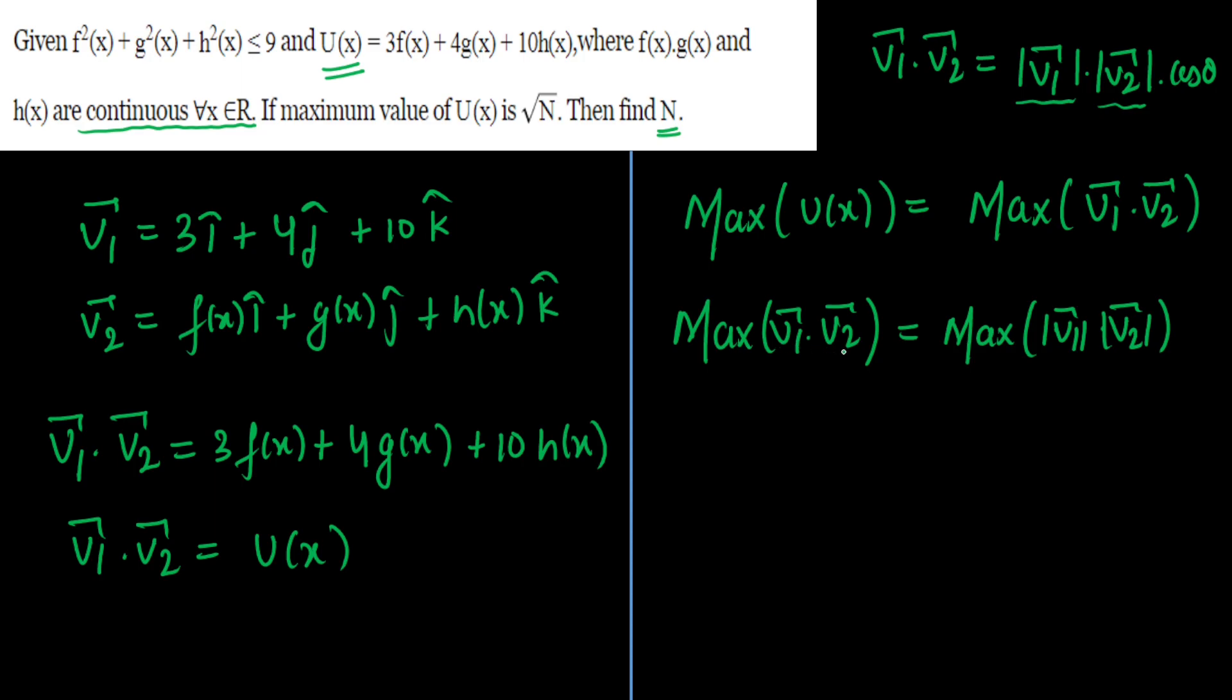And maximum of v₁·v₂ is u(x). So let's calculate maximum of this product. |v₁| we have to calculate here - that is √(3² + 4² + 10²), and then v₂ is √(f² + g² + h²). Because |v₁| is fixed, |v₂| is varying here.